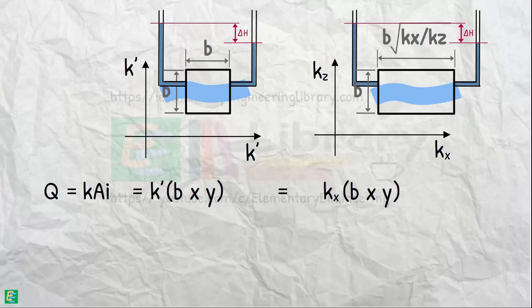And if delta h is the head loss across the field, then hydraulic gradient in elementary square is delta h by small b, and in this case, delta h by b times square root of kx by kz.